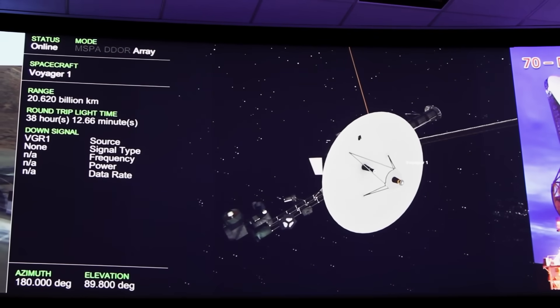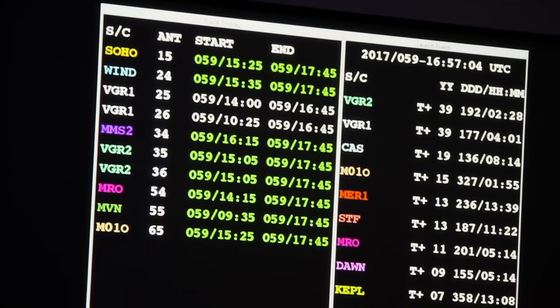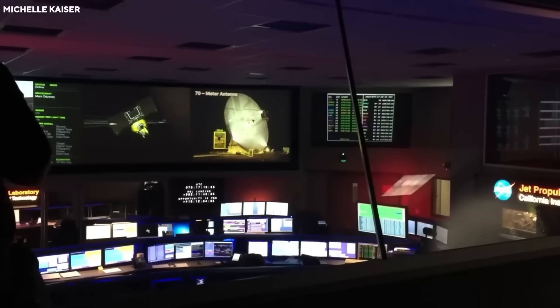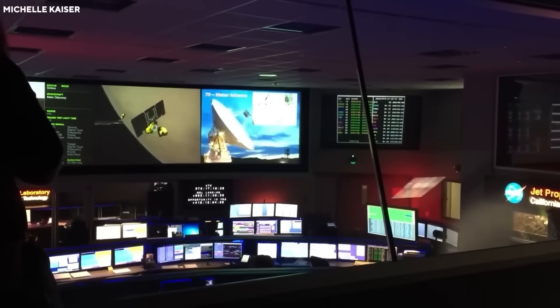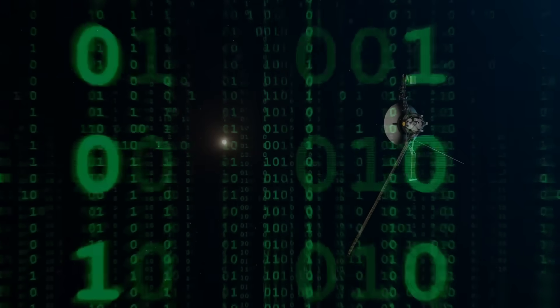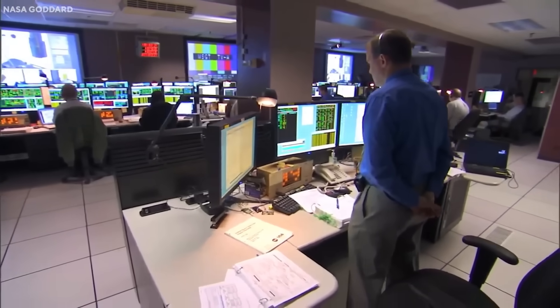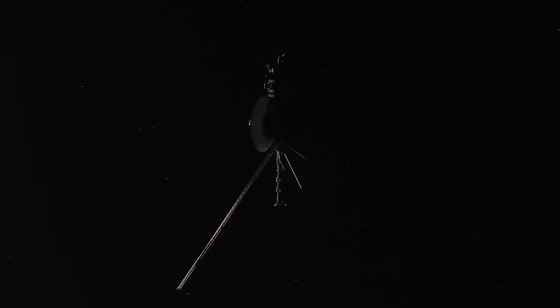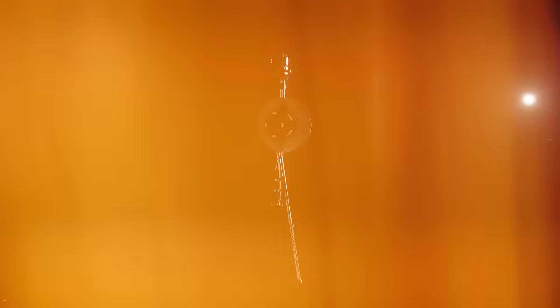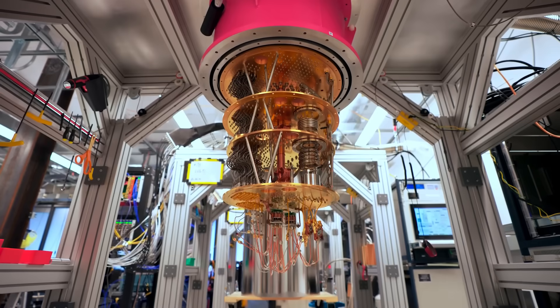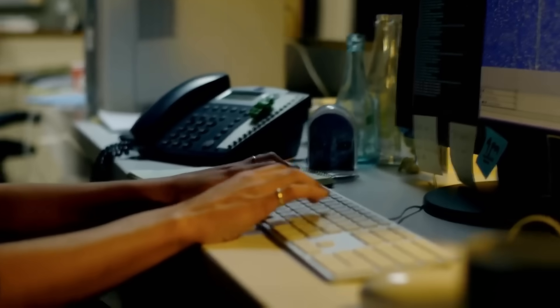Today, Voyager 1 has traveled more than 15 billion miles from Earth. Its signals, moving at the speed of light, take over 21 hours to reach us. Every bit of data represents a connection to the most distant human creation in existence. But Voyager was always meant to be more than a scientific instrument. The golden record aboard each Voyager spacecraft contains 115 images of Earth, natural sounds like wind and thunder, musical selections from different cultures, and greetings in 55 languages. It includes a map showing Earth's location and instructions for playing the record.